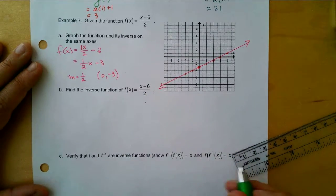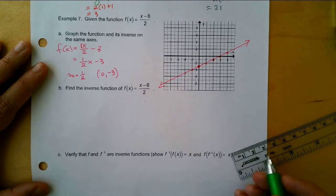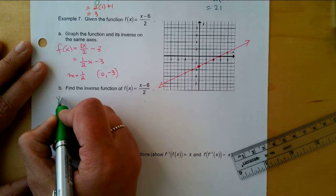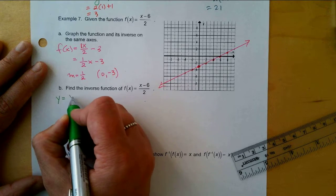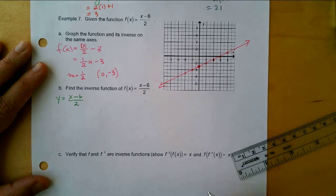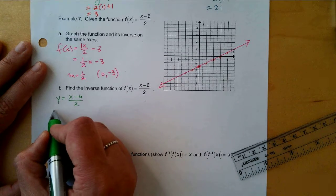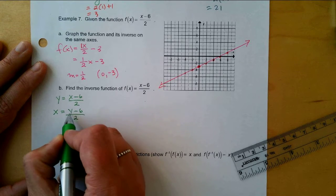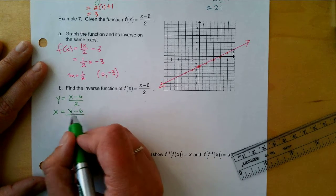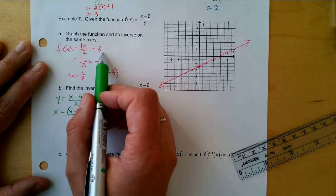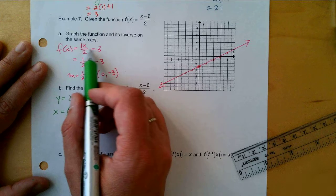To find the inverse algebraically, what's the very first step? Replace the f(x) with y: y equals x minus 6 divided by 2. What's the next step? Switch the x and the y, so I get x equals y minus 6 divided by 2. Now one thing to realize is this whole thing here is being divided by 2.